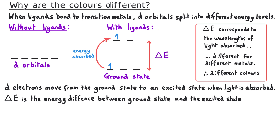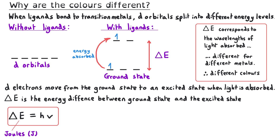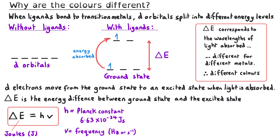The energy difference between the ground state and the excited state determines the wavelength of light absorbed, and we can calculate it using Planck's equation: delta E equals hν, where delta E is the energy difference measured in joules, h is the Planck constant with a value of 6.63 × 10⁻³⁴ joule seconds, and ν equals the frequency of the light absorbed, measured in hertz or seconds to the minus 1.